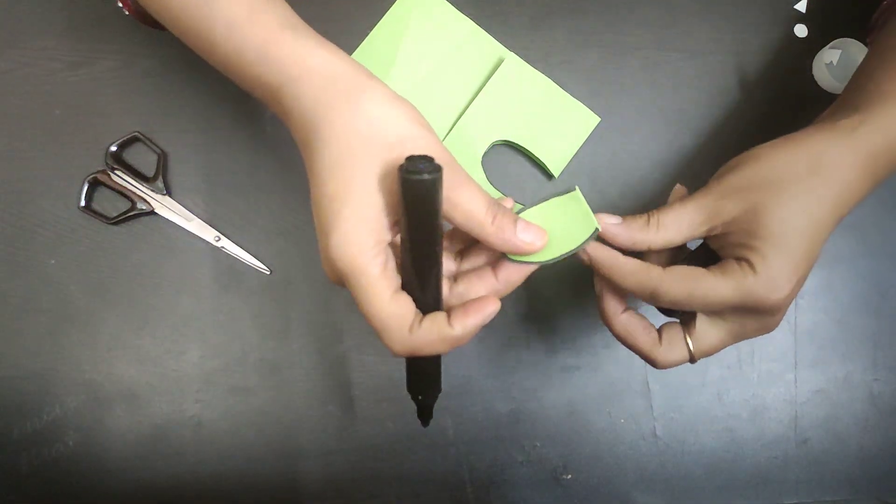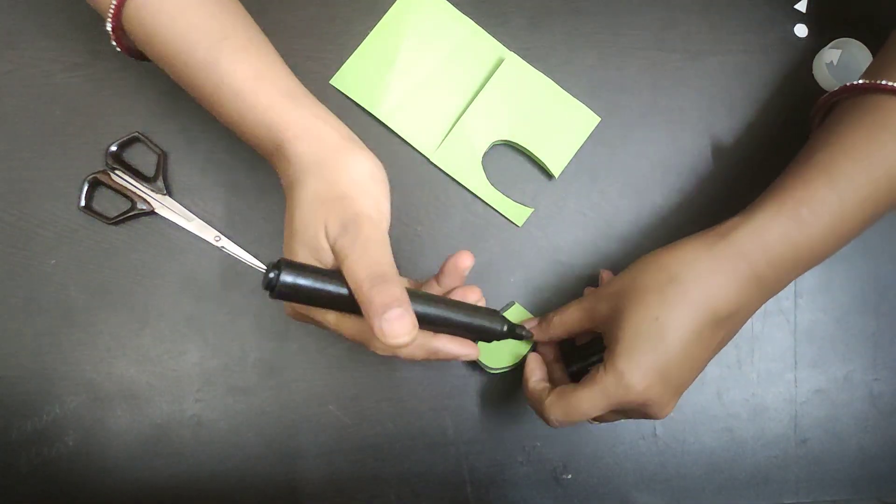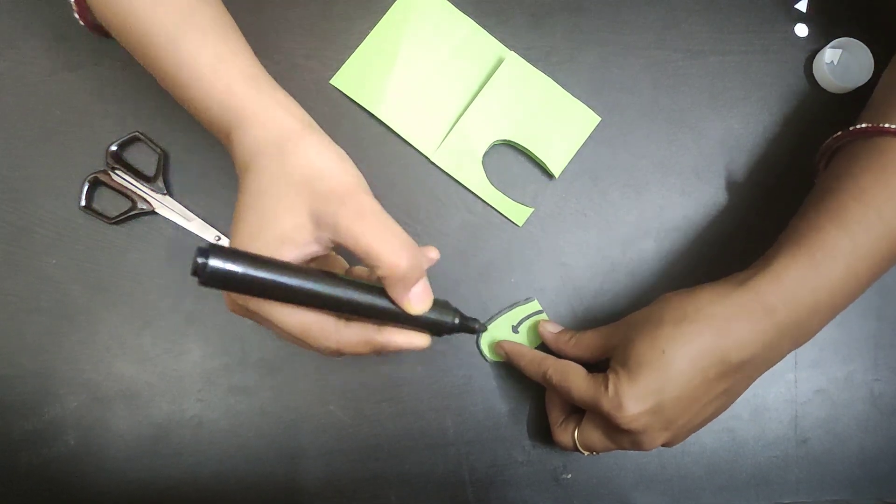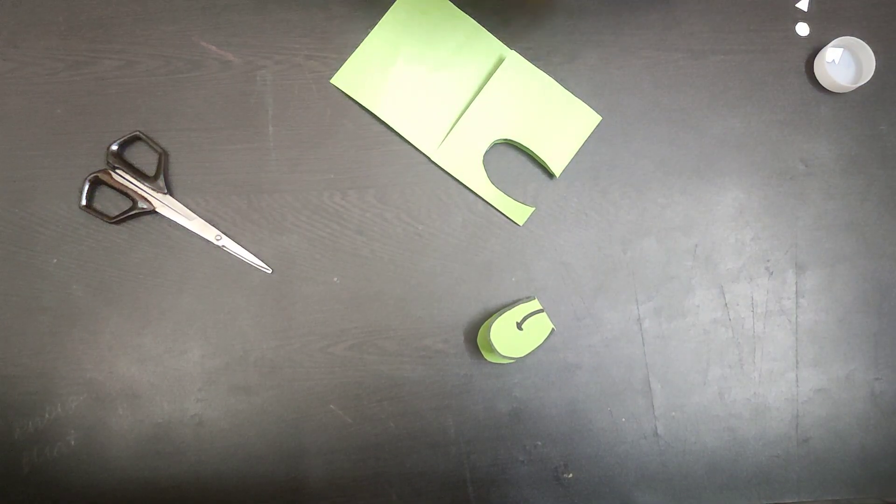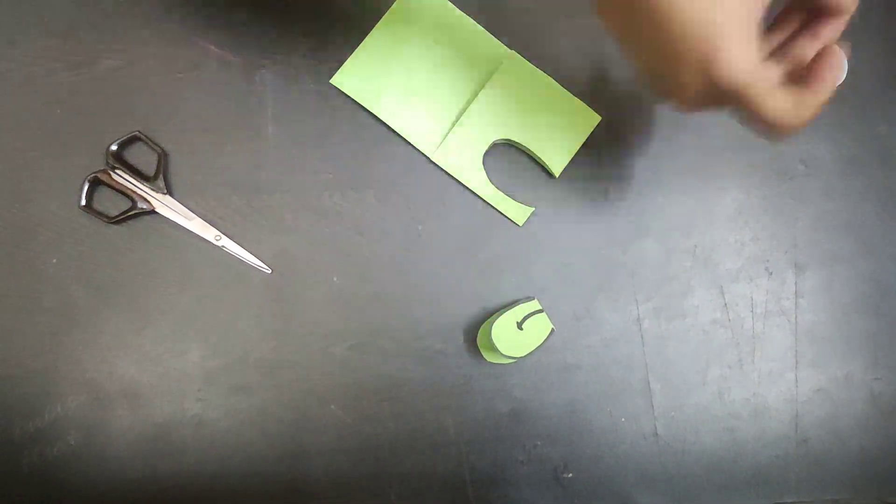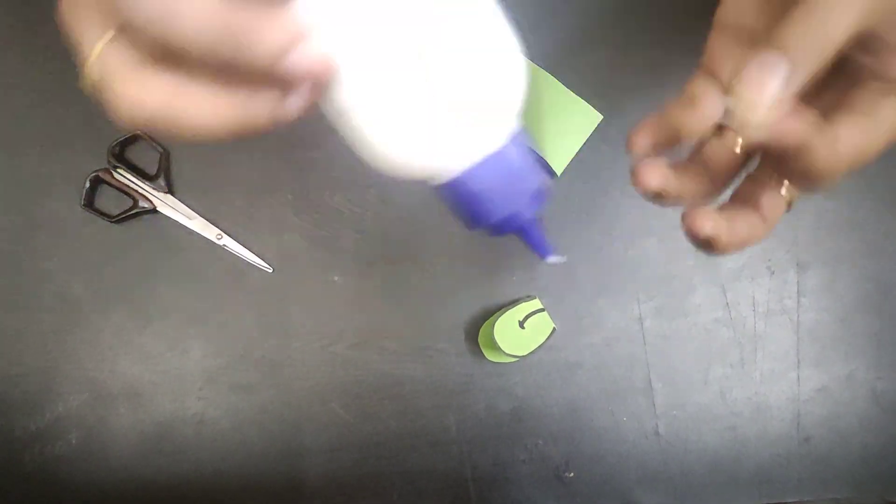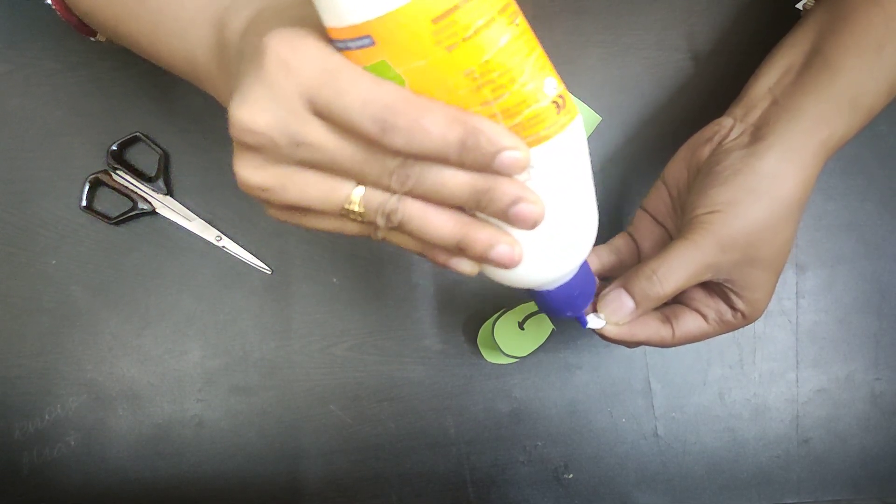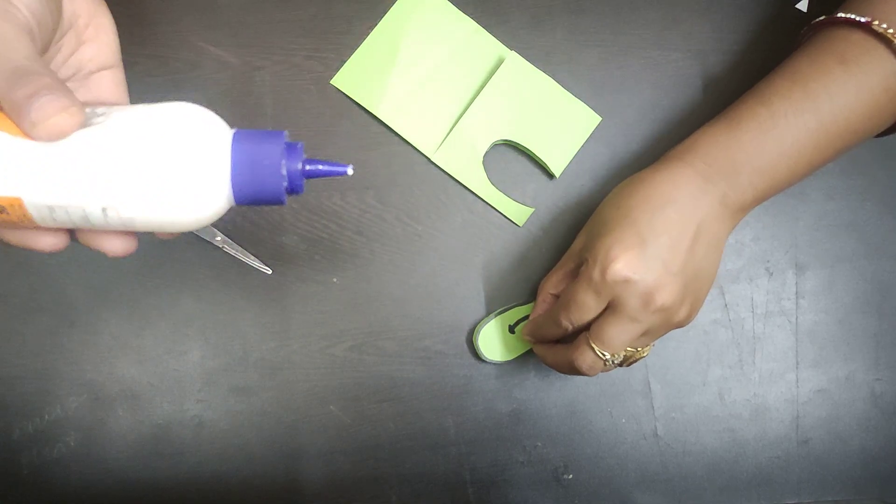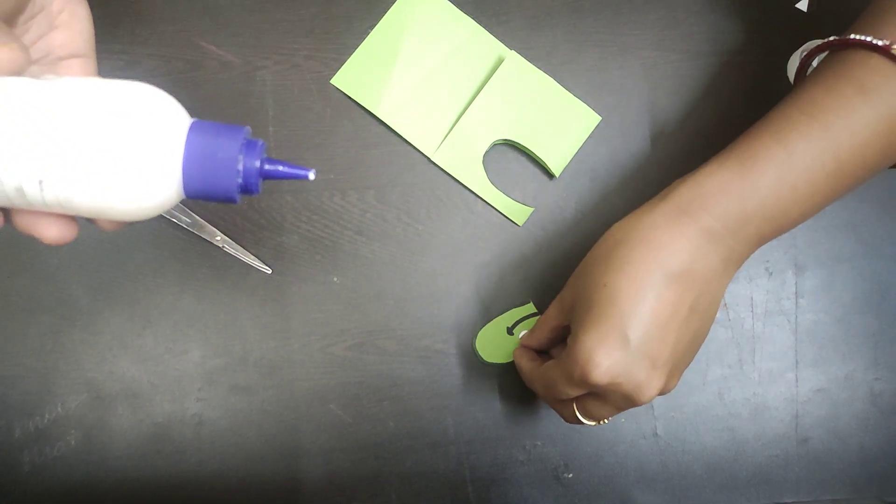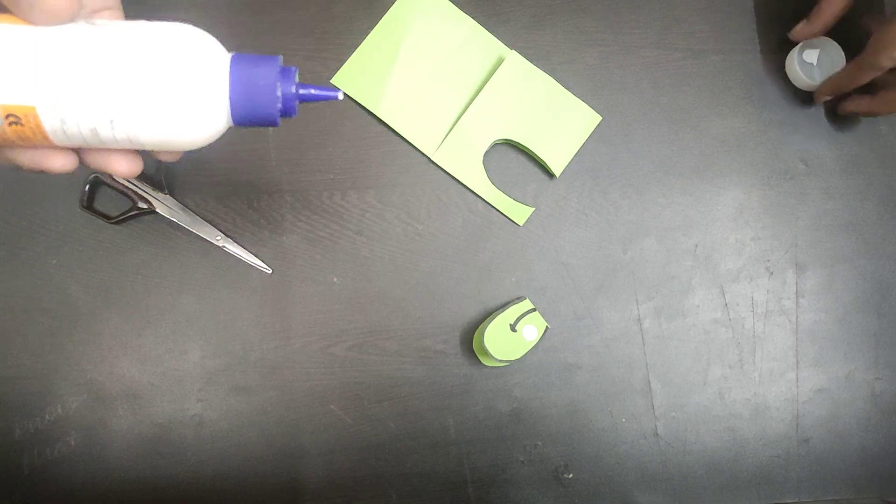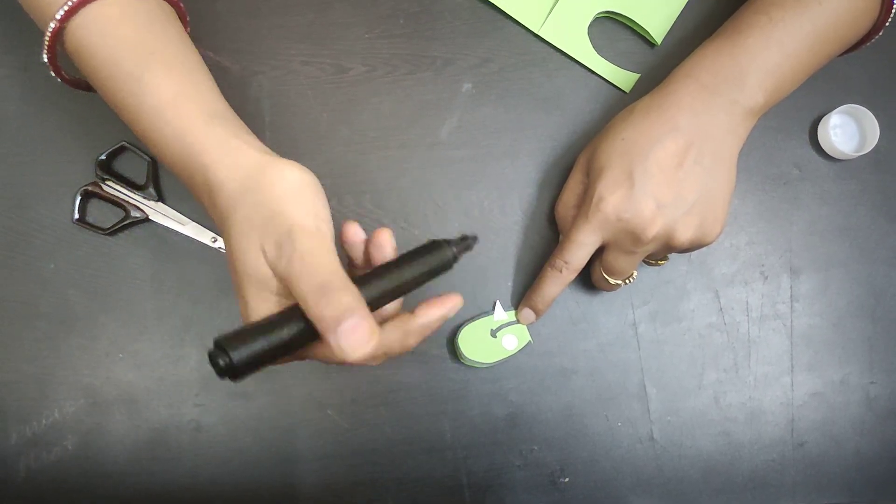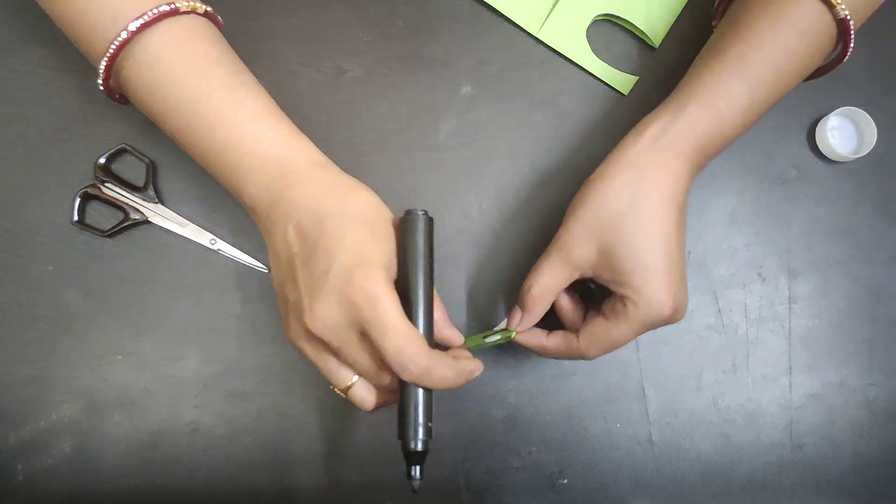Now along this folded side, draw the mouth of the dinosaur. We have taken the white part for eyes. Paste it with the help of fabric glue. Paste the circles and triangles along both sides.